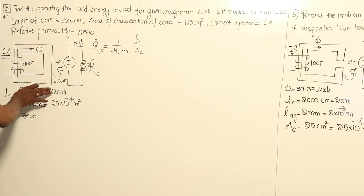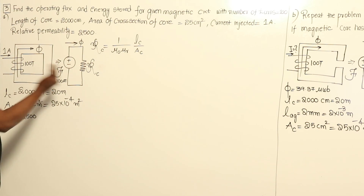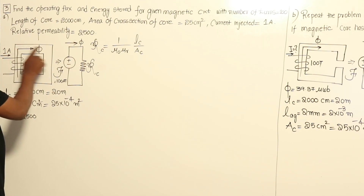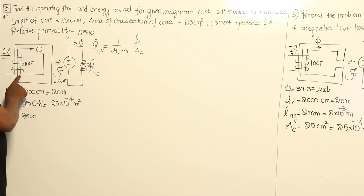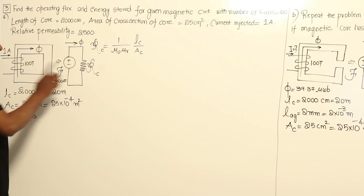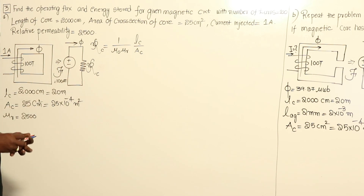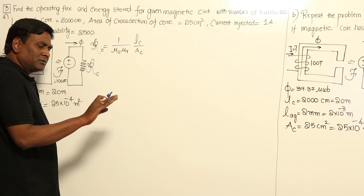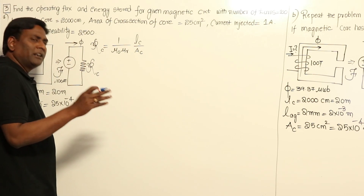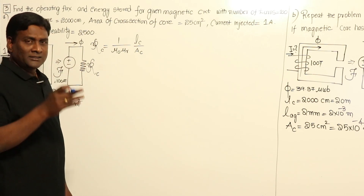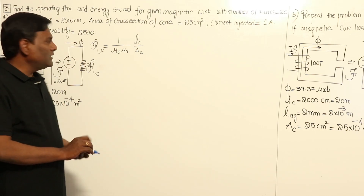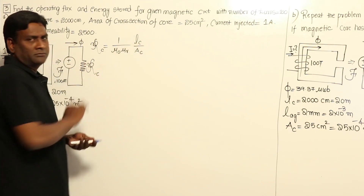Any magnetic circuit given — how to analyze it? As per our previous discussion, we convert it into an analogous electrical circuit. Here I'm going to have only one reluctance of the iron core. The reluctance formula, analogous to electrical resistance, is: resistance = ρl/A = l/(σA), and for magnetic circuits, reluctance = l/(μA).